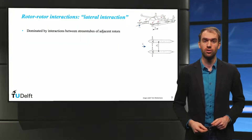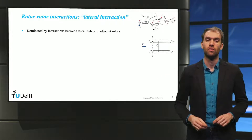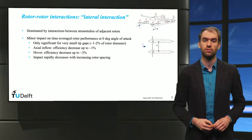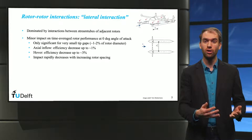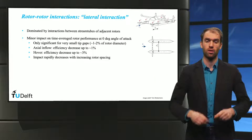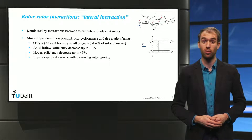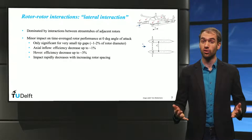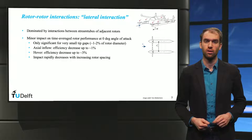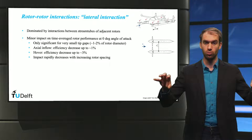For the lateral interaction case, the stream tubes of adjacent rotors affect each other. This has a minor impact on the time-average rotor performance at zero degree angle of attack. A significant reduction in performance only occurs when the tip spacing between the adjacent rotors is very small. In actual inflow, the rotor efficiency decreases by at most about 1%. In the hover condition, the maximum loss in efficiency is somewhat larger, at up to 3%. The efficiency loss rapidly decreases upon increasing the spacing between the rotors.